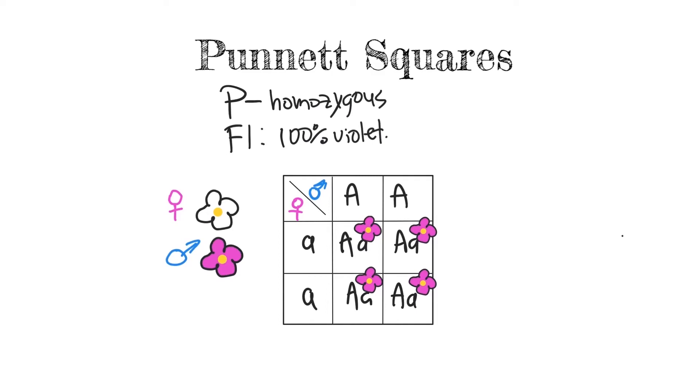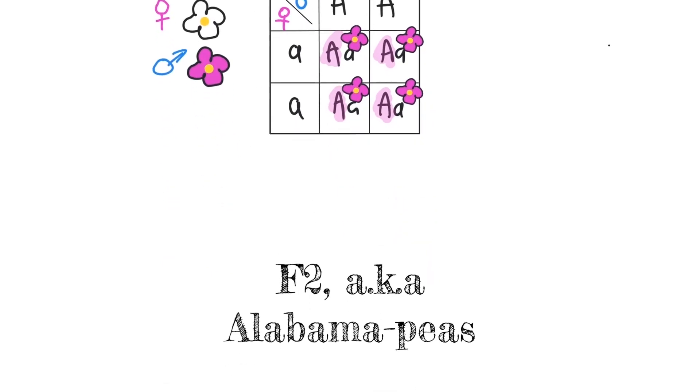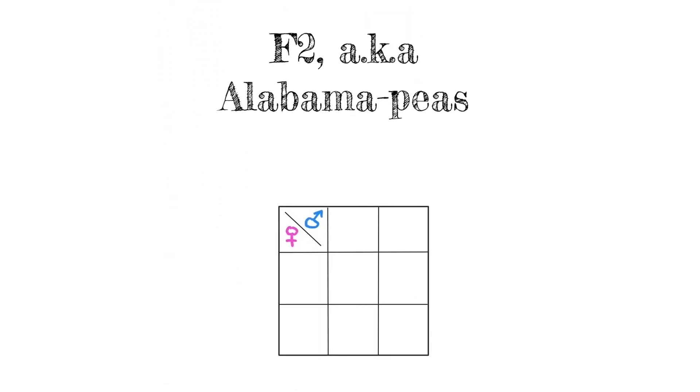They contain both the dominant and the recessive alleles. However, their color would still be violet from the law of dominance. What Mendel did next was he crossed the F1 generation.